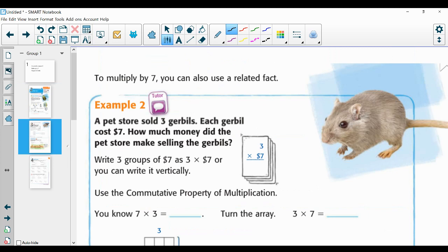Okay. Let's do another one. A pet store sold some gerbils. Each gerbil costs some money. Okay. So gerbils. And they each cost a certain amount of money. So a pet store sold three gerbils. Each gerbil costs seven dollars. Okay. So I see the three gerbils. Each one has a price tag of seven dollars. A pet store sold three gerbils. Each gerbil costs seven dollars. How much money did the pet store make selling the gerbils?